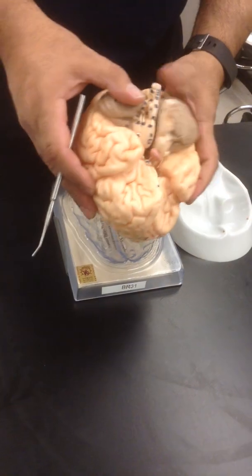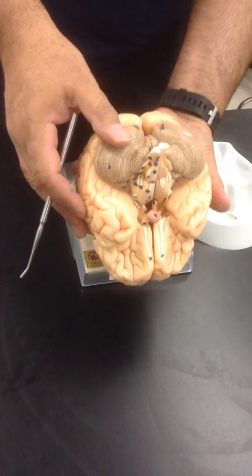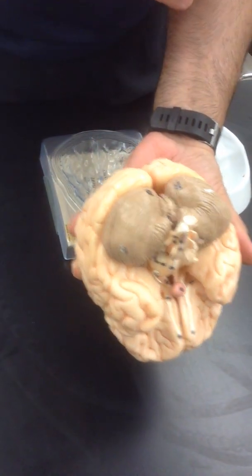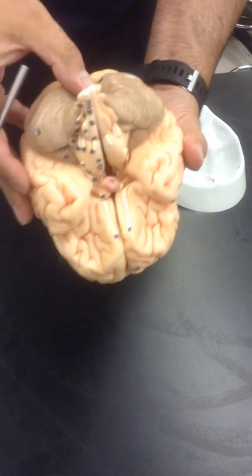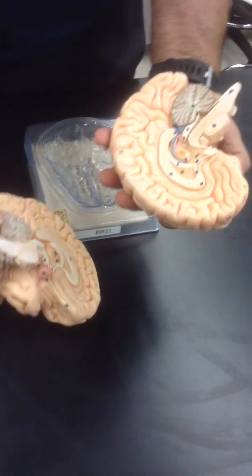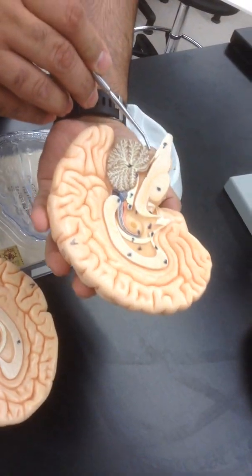The folia that you can see there helps with some of the motor activity. When you put the two halves together, right down the center here, this section is known as the vermis, and then you have the two lobes, and ultimately, right in this part, you're going to have the flocculonodular part.